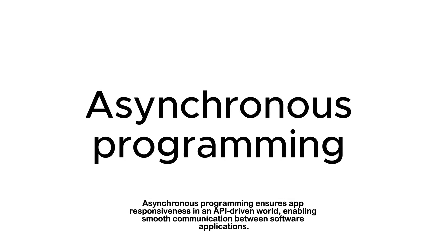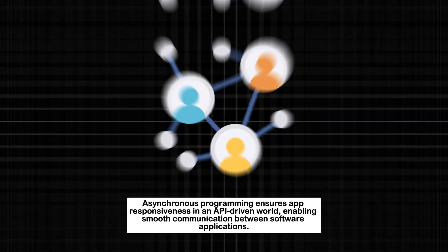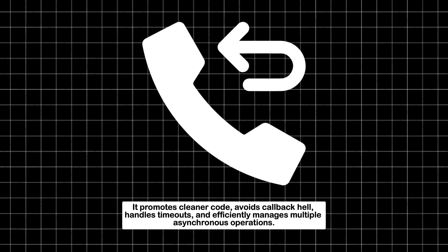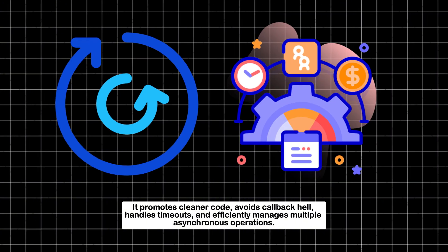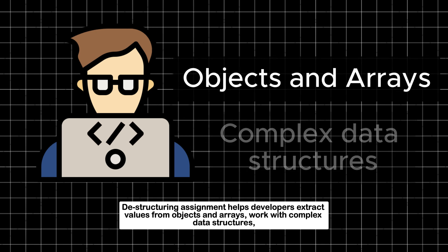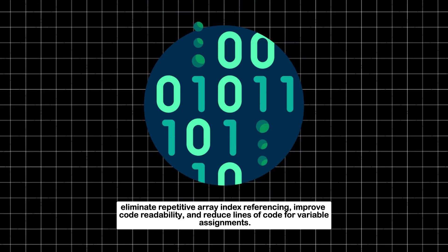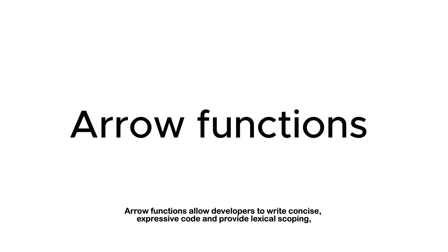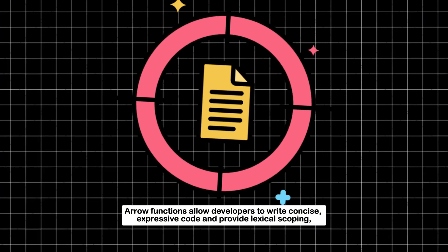Features of JavaScript: Asynchronous programming ensures app responsiveness in an API-driven world, enabling smooth communication between software applications. It promotes cleaner code, avoids callback hell, handles timeouts, and efficiently manages multiple asynchronous operations. Destructuring assignment helps developers extract values from objects and arrays, work with complex data structures, eliminate repetitive array index referencing, improve code readability, and reduce lines of code for variable assignments. Arrow functions allow developers to write concise, expressive code and provide lexical scoping, capturing the value of 'this' from the surrounding context to avoid scope-related bugs.